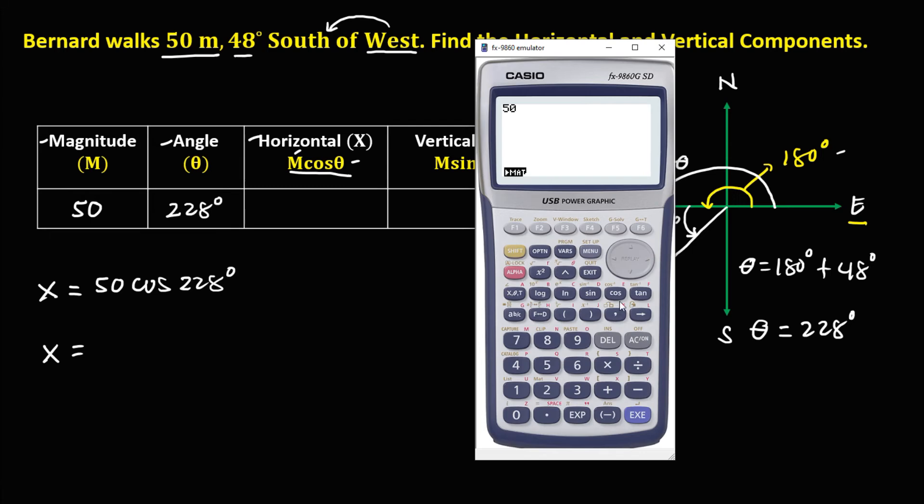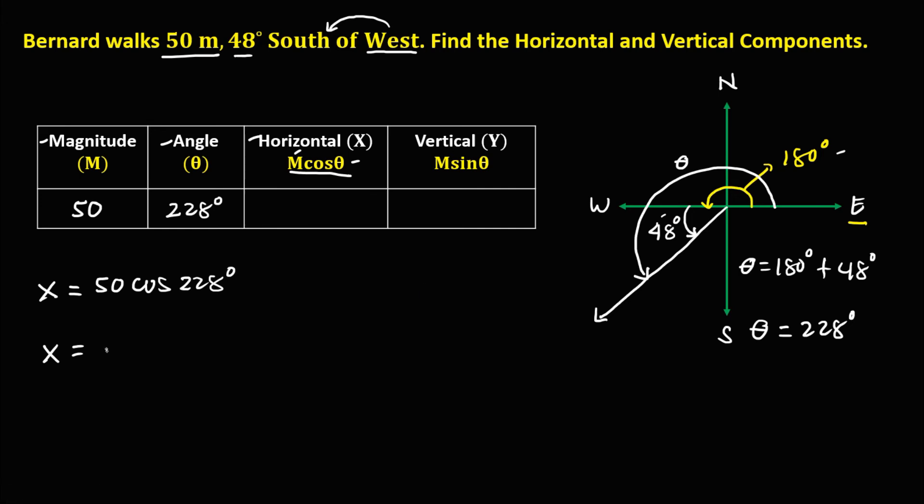X equals 50 cosine 228 degrees equals that's negative 11.62. So negative 11.62 meters. So this is now the horizontal component.